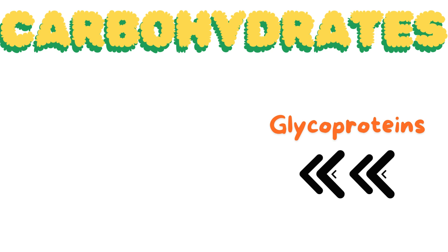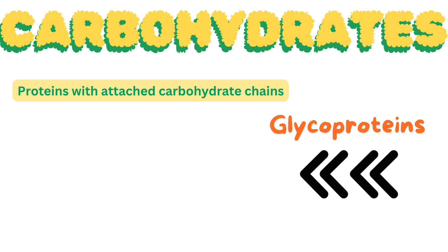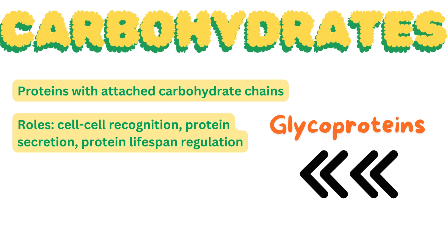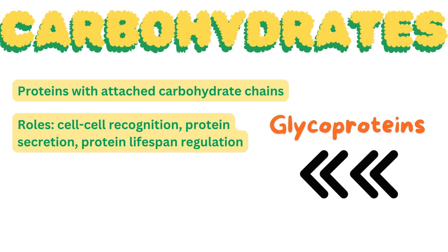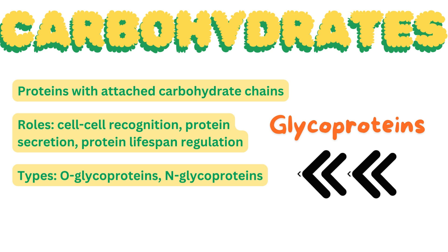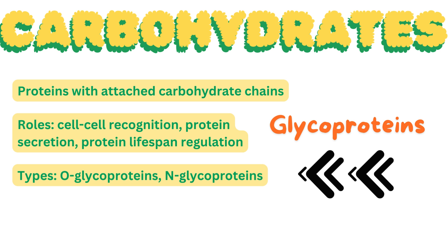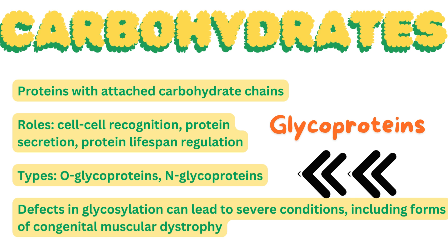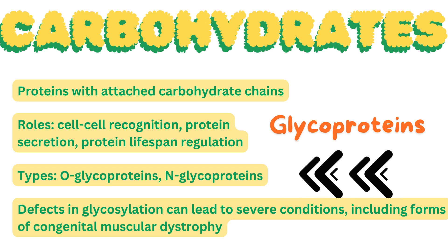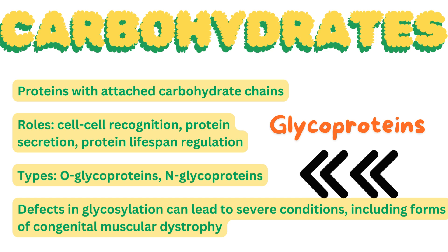Glycoproteins are proteins with carbohydrate chains attached, playing numerous biological roles including cell-cell recognition, targeting proteins for secretion, and regulating protein lifespan in circulation. There are two main types: O-glycoproteins, with oligosaccharides attached to oxygen in serine or threonine residues, and N-glycoproteins, with oligosaccharides attached to nitrogen in asparagine residues. Defects in glycosylation can lead to severe conditions, including forms of congenital muscular dystrophy.